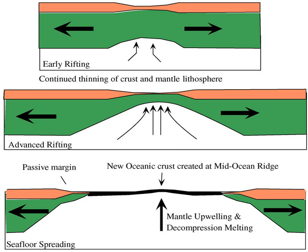Transitional crust, separating true oceanic and continental crusts, is the foundation of any passive margin. It forms during the rifting stage and consists of two endmembers: volcanic and non-volcanic. This classification scheme only applies to rifted and transtensional margins. Transitional crust of sheared margins is very poorly known.